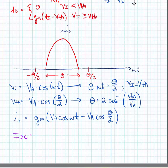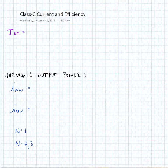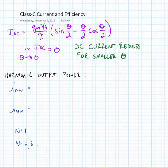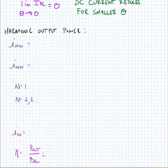Now to find the DC current, we just integrate over one period of the drain current. We can find that the limit of the DC current as theta goes to zero is equal to zero. This means as we reduce the conduction angle, the DC current reduces, and ultimately this is going to save power.